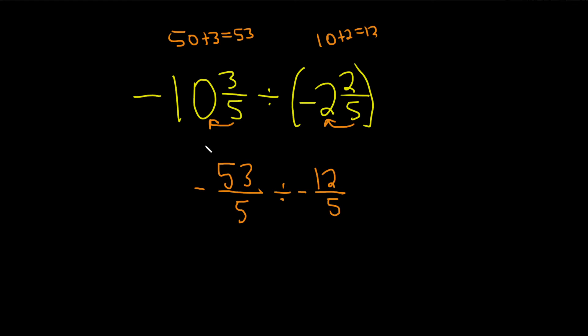Now that we've converted our mixed numbers into fractions, we're going to change the division symbol. Remember, division is the same thing as multiplication by the reciprocal. So this is negative 53 over 5 times—you just flip the number, that's how you find the reciprocal—negative 5 over 12.